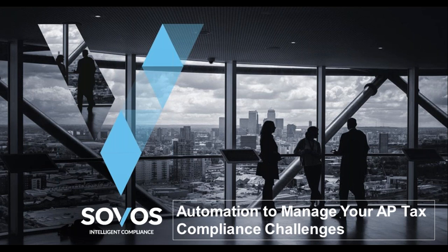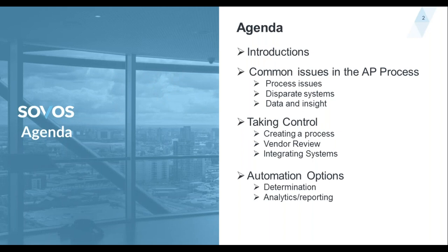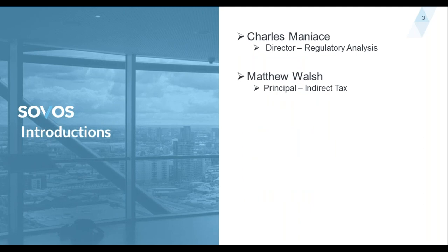We will do our best to leave 10 minutes at the end, but when Chuck and I start talking about taxes, we get a little crazy. If we do go long, we will answer questions afterwards by writing. So for today's agenda, we'll do some introductions. We'll talk about common issues in the AP process across industries, how to take control of some of those issues and processes, and then we'll talk about some of the solutions here at Sobos that you may be able to utilize in terms of helping manage the process internally in your business.